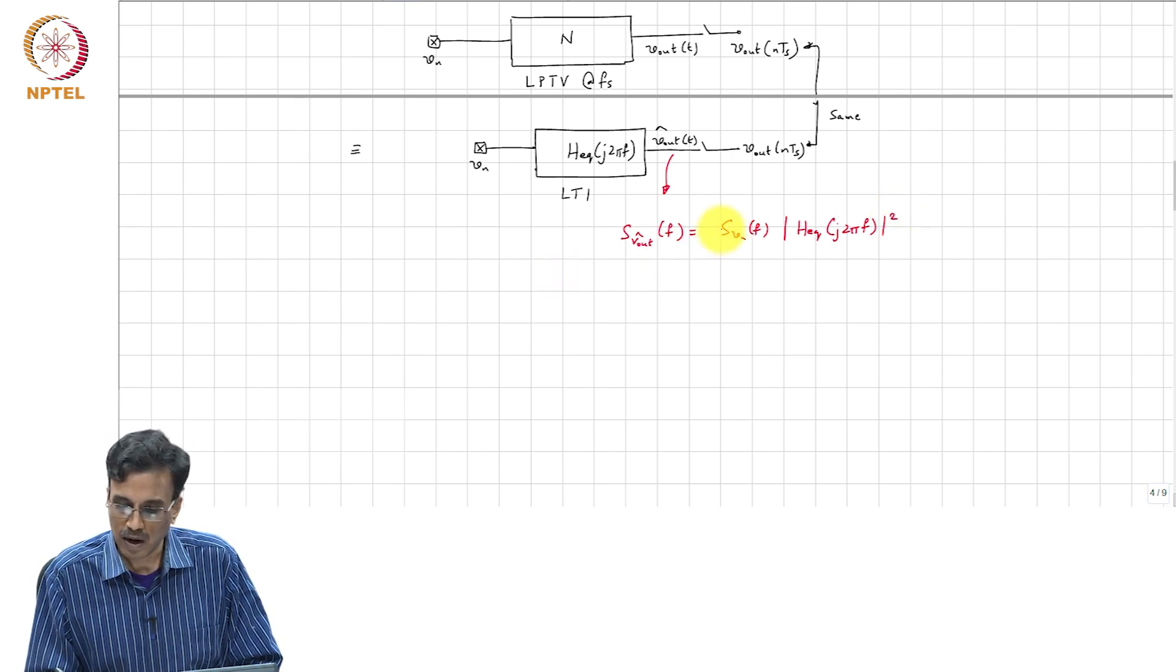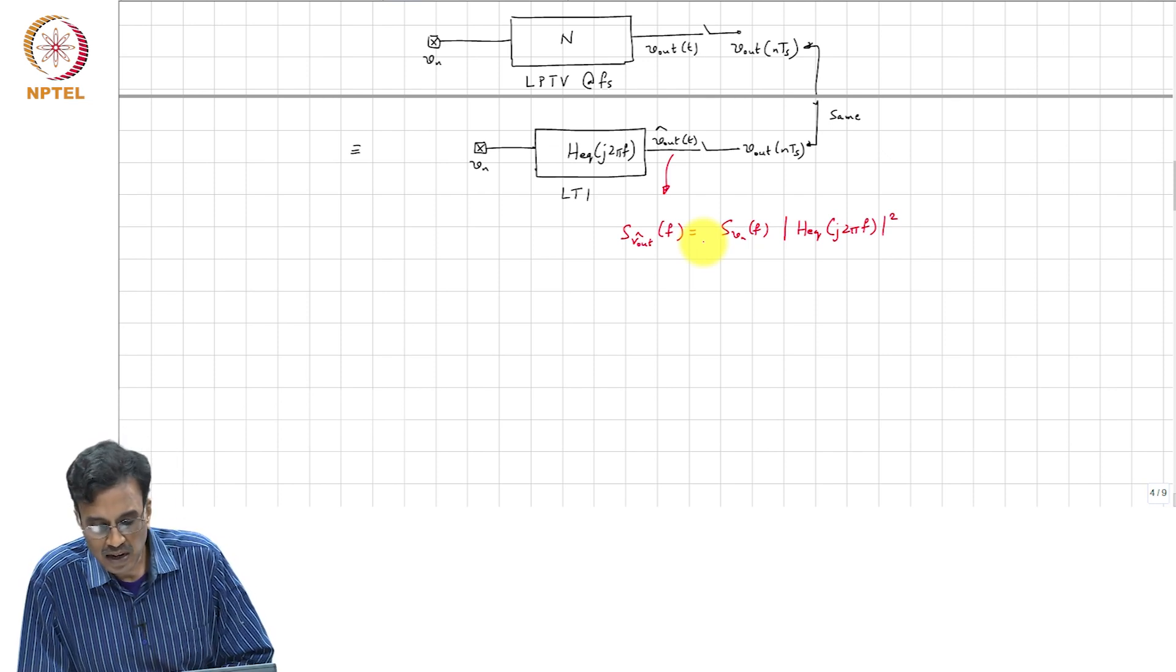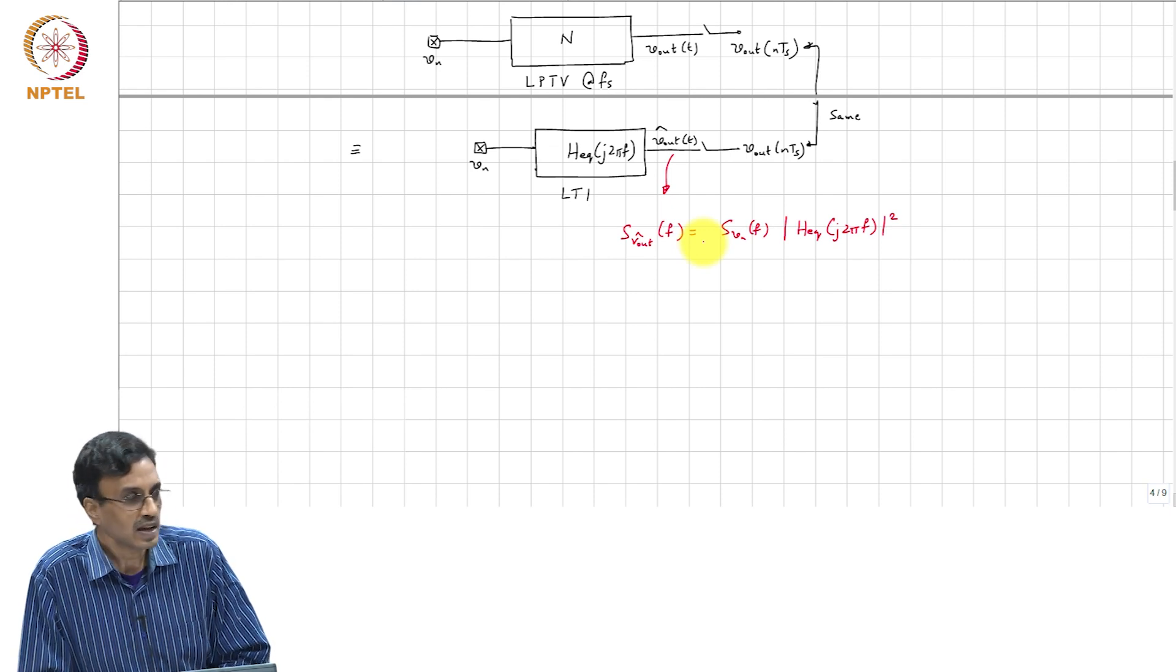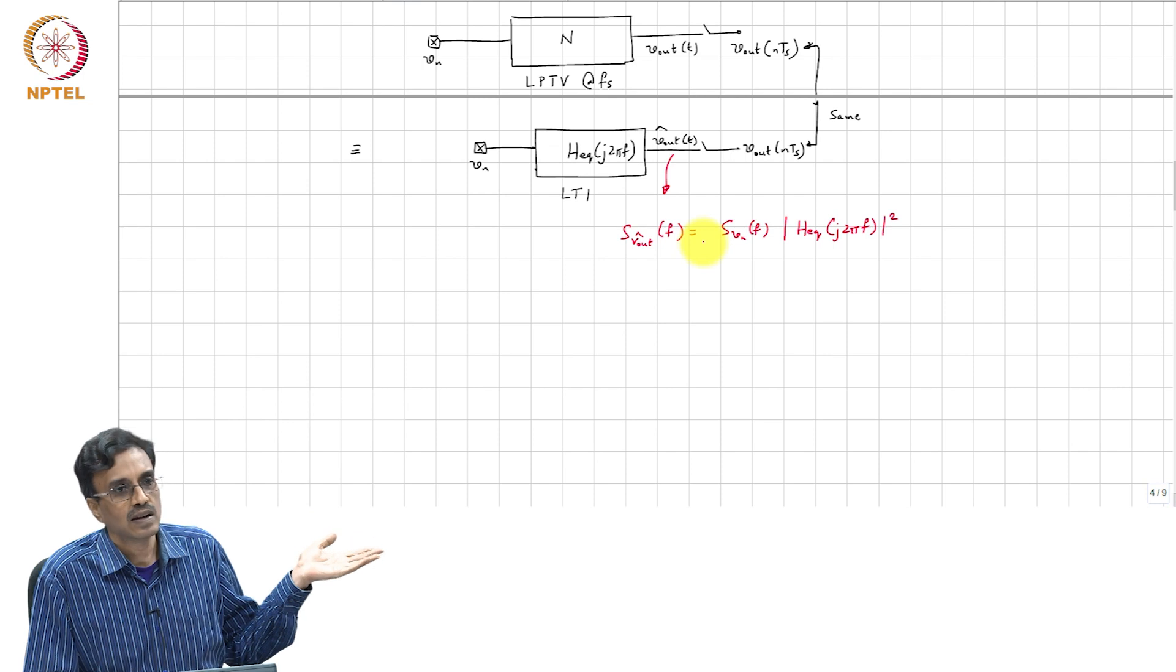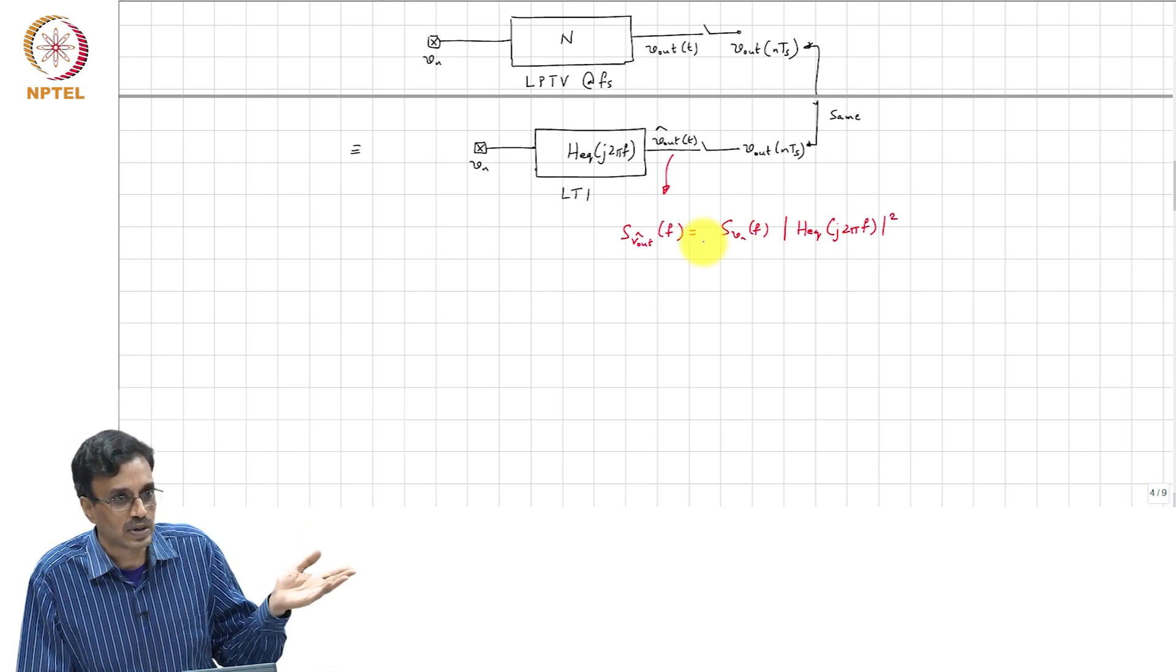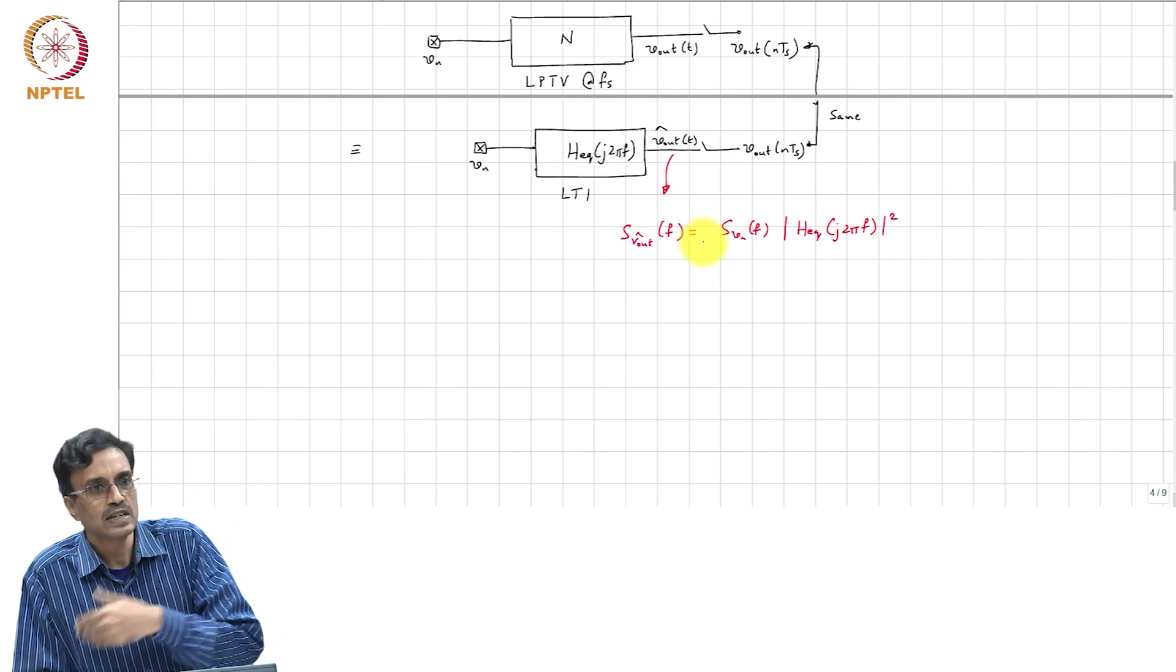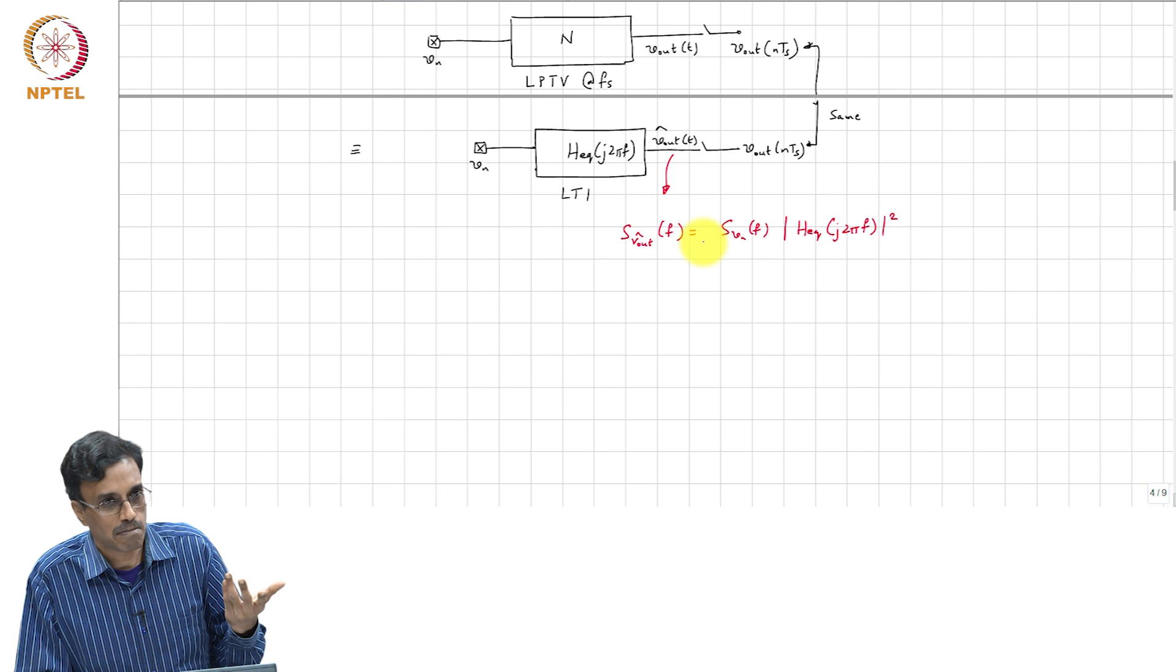So, what comment can we make? Because if V_N is stationary then V_out hat of T, the noise at the output is also going to be stationary, which basically means that its mean square value does not change with time. So, at whatever time you sample it, the mean square value remains the same.